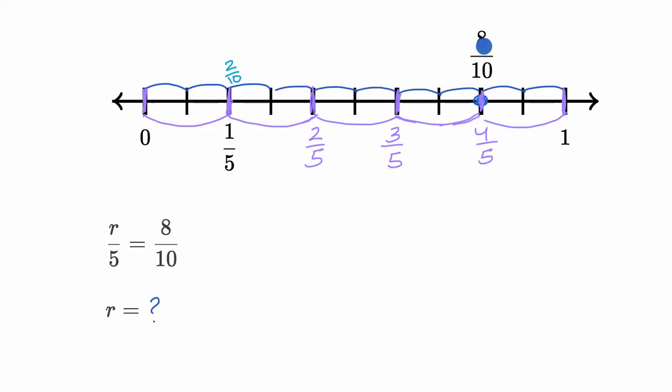which we see is exactly equivalent to eight tenths. And that makes sense because we also saw that every fifth is equivalent to two tenths. So four fifths is going to be equivalent to eight of those tenths. We see that very clearly right over here. And so r is equal to four. Four fifths is equal to eight tenths, so r is equal to four.